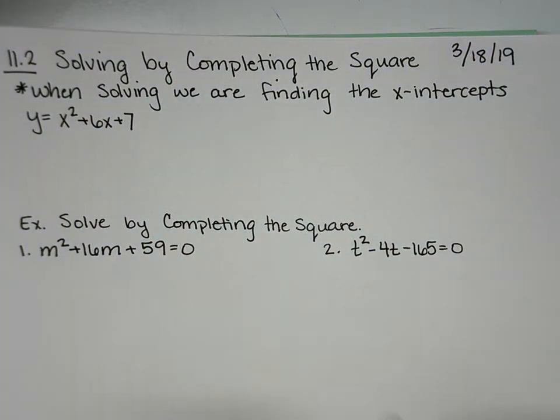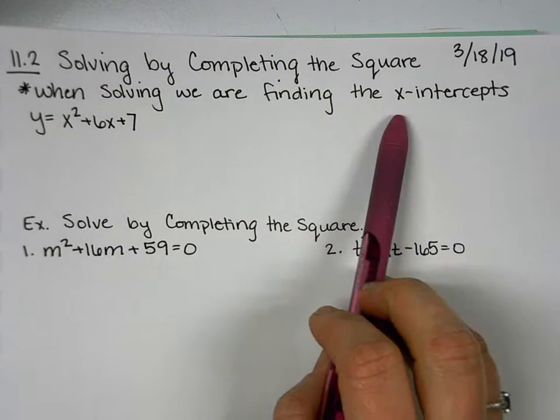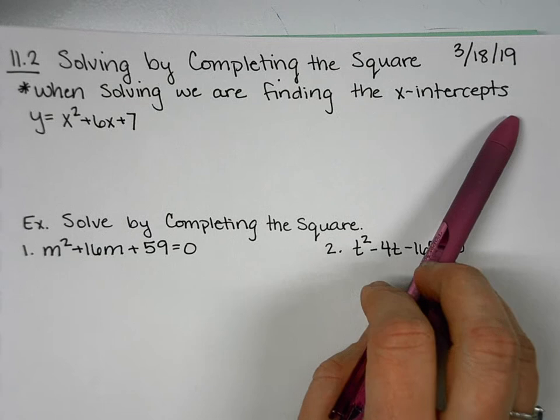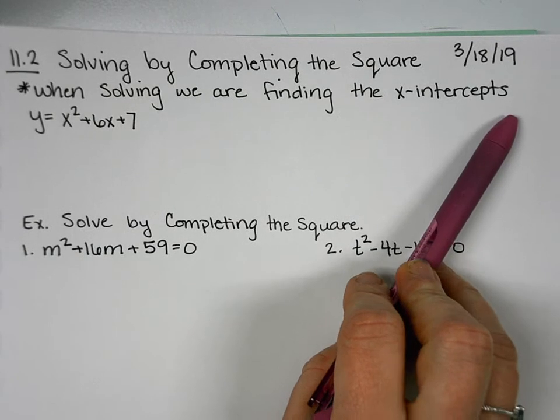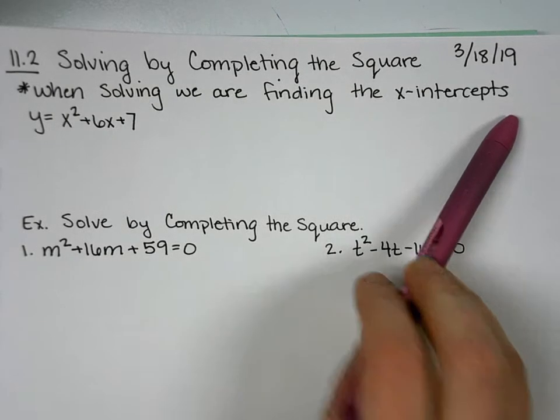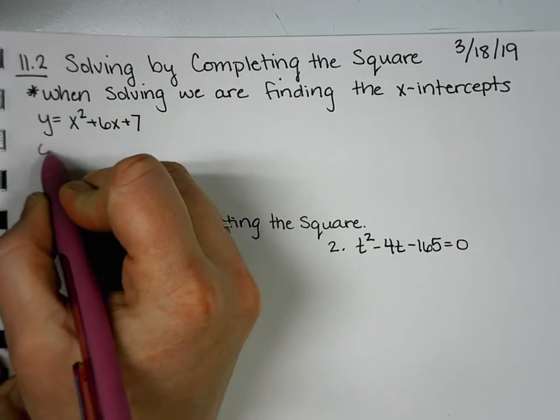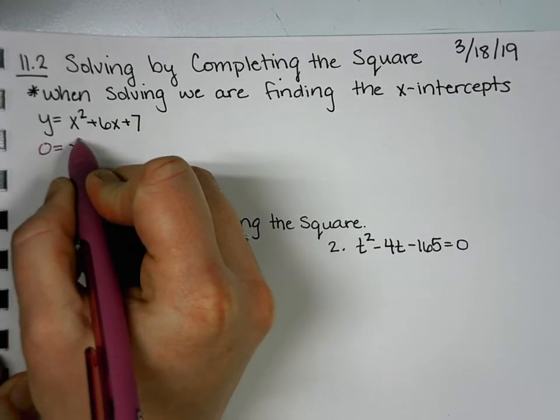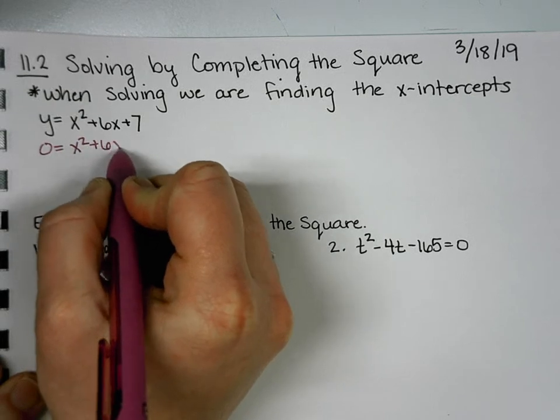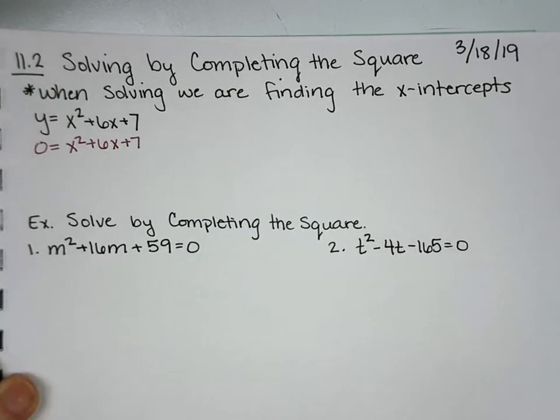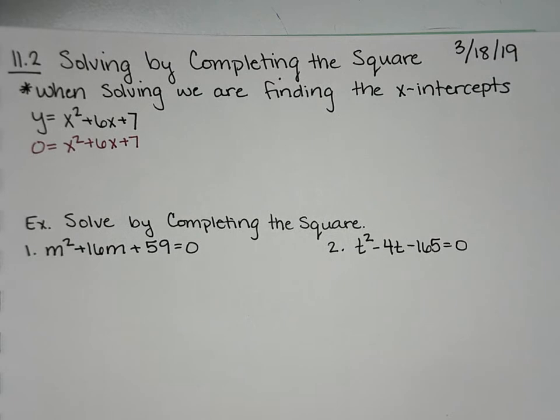The key thing to remember is that when we're solving, we're finding the x-intercepts. What does y equal at the x-intercept? Zero. So what we're doing is we're taking y, making it zero, and then we're going to solve by completing the square.